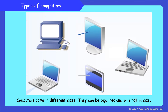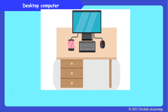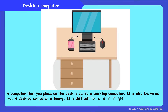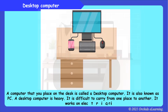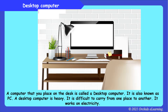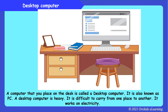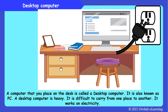Types of computers: Computers come in different sizes — they can be big, medium, or small in size. A desktop computer is also known as a PC, that is personal computer. A desktop computer is heavy, it is difficult to carry from one place to another, and it works on electricity.